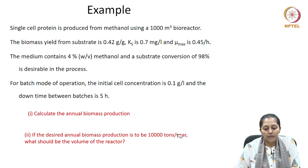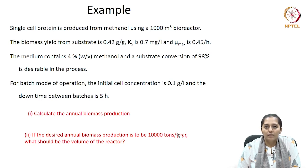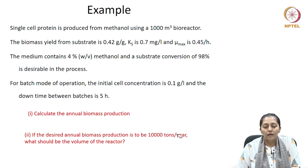Single cell protein is produced from methanol using a 1000 meter cube bioreactor. Here, methanol will be the substrate, and the volume of the bioreactor is also given to us, which is 1000 meter cube.